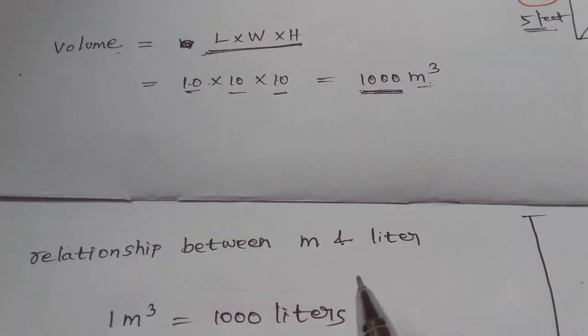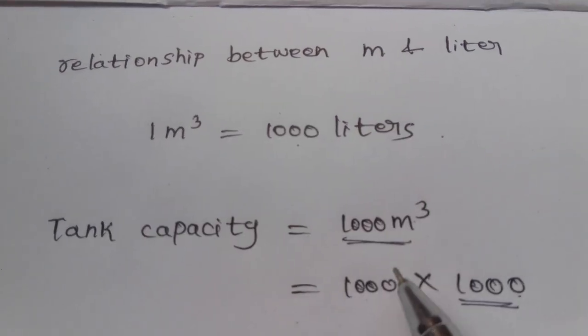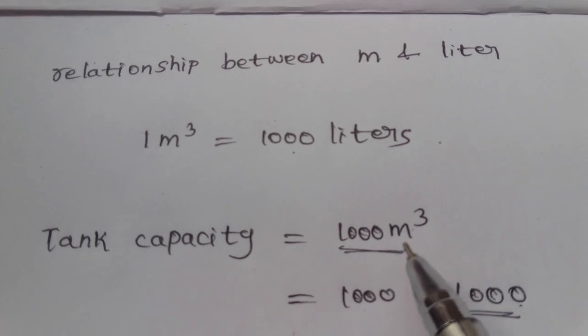Here we have 1000m cube, so 1000m cube equals... tank capacity is equal to 1000m cube.